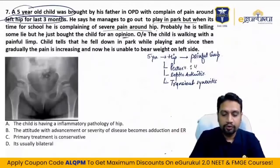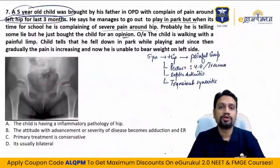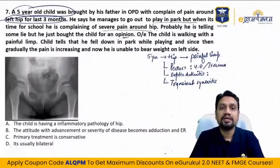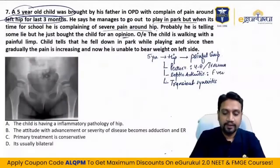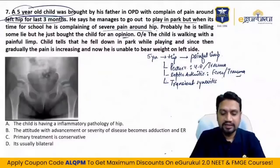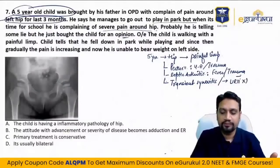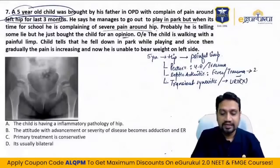Perthes: four to eight years, history of trauma one to two months prior. Septic arthritis: restriction of movements, fever, history of trauma — fever is not mentioned here. Transient synovitis: usually after upper respiratory tract infection (URTI), which is not mentioned. Transient synovitis age group is 5 to 12 years; septic arthritis age group is 2 to 5 years.